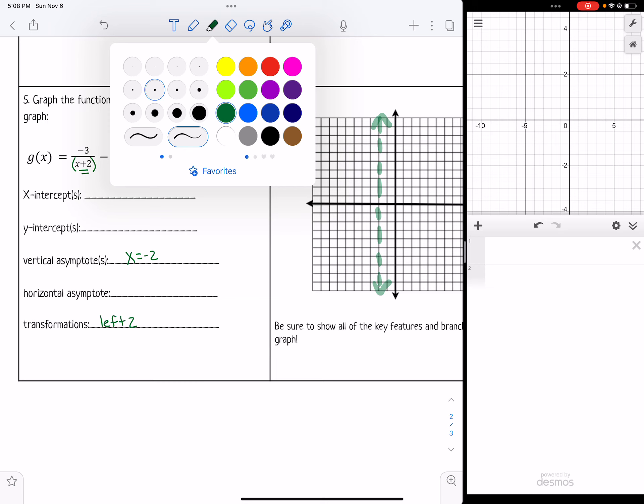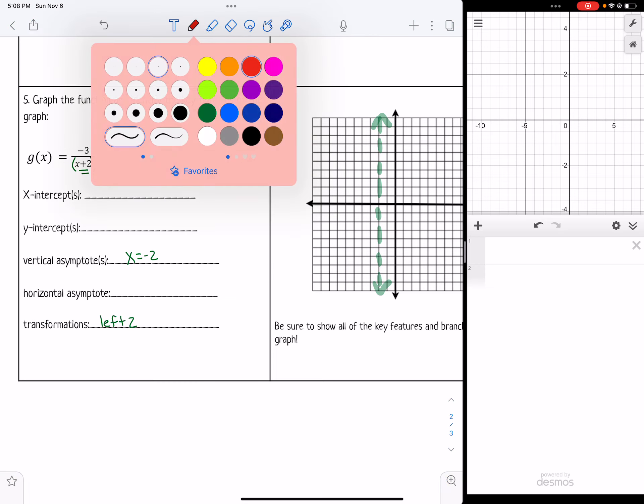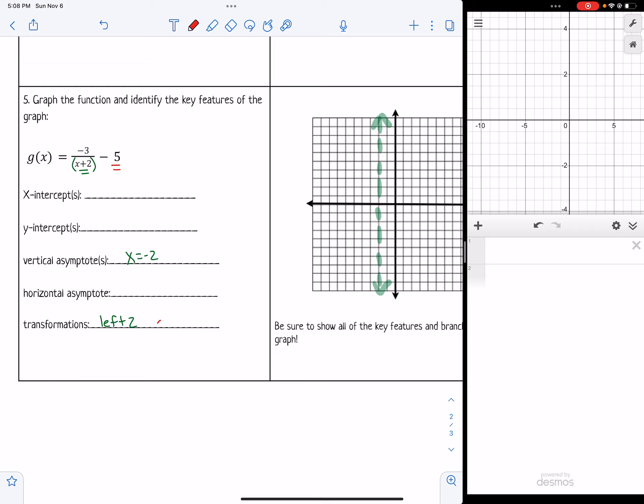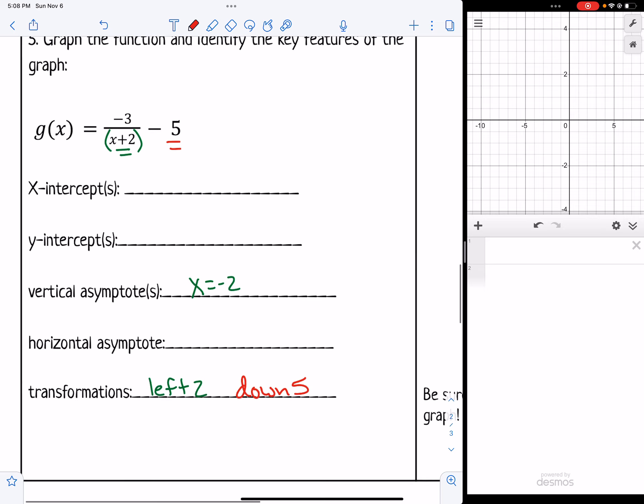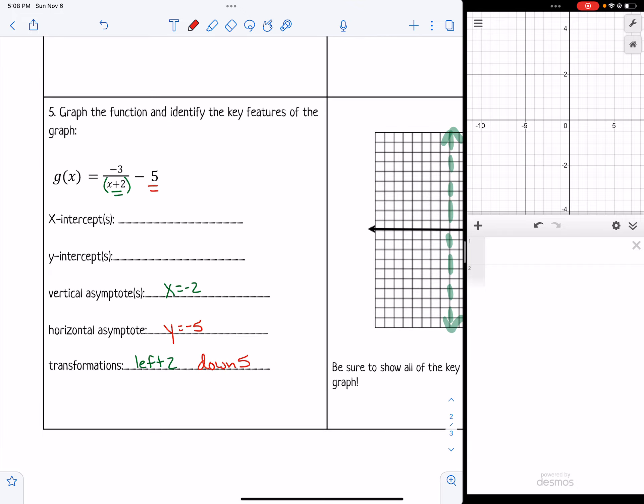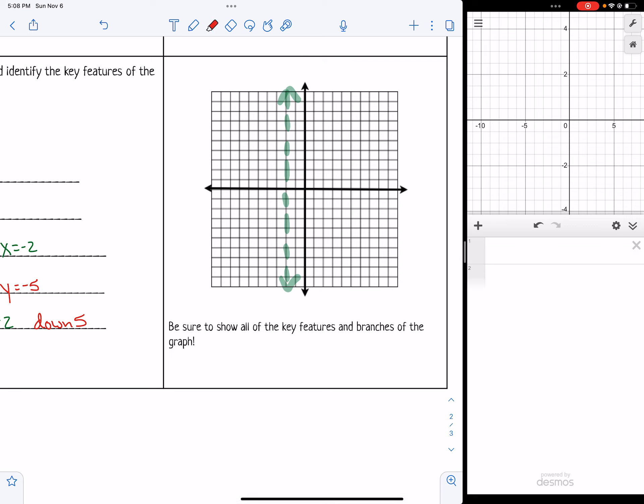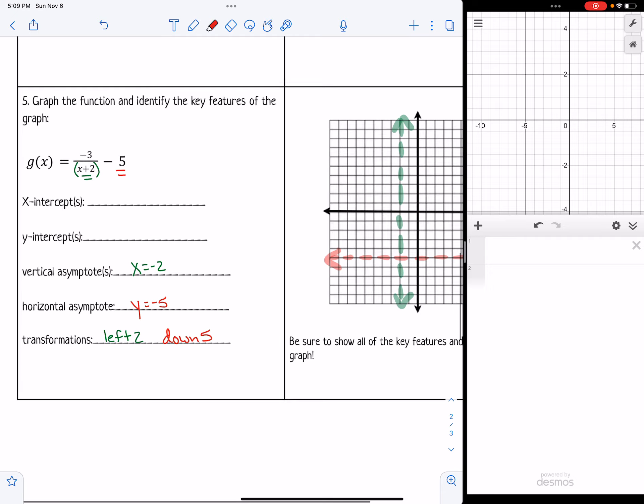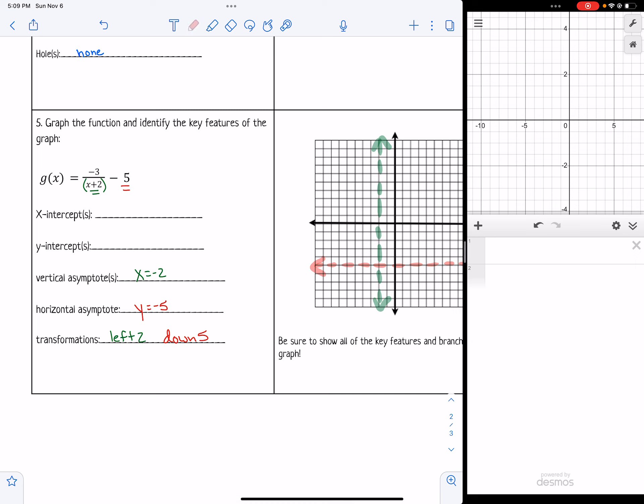Then the minus 5 for the k value would make it go down 5. So my graph is going to shift down 5, which means my horizontal asymptote is going to be located at y equals negative 5. So I'm going to go there, 1, 2, 3, 4, 5 down and sketch it just like that. I see I have a negative, which means it's going to reflect over the x-axis. So I'm just going to write that out.